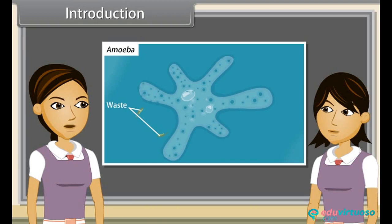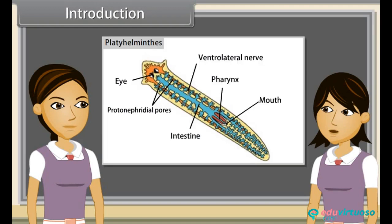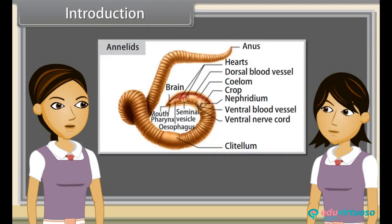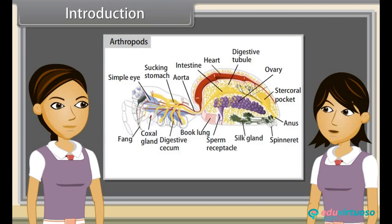Complex multicellular organisms use specialized organs to perform the same function. In platyhelminthes, excretory organs are protonephridia or flame cells. While in annelids, it is nephridia. In arthropods, excretory organs are coxal glands, antennary or green glands, and Malpighian tubules.